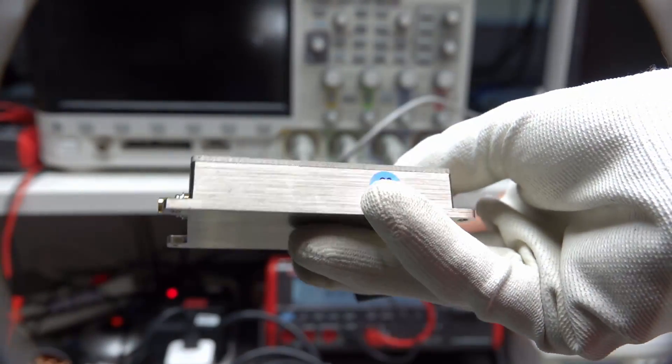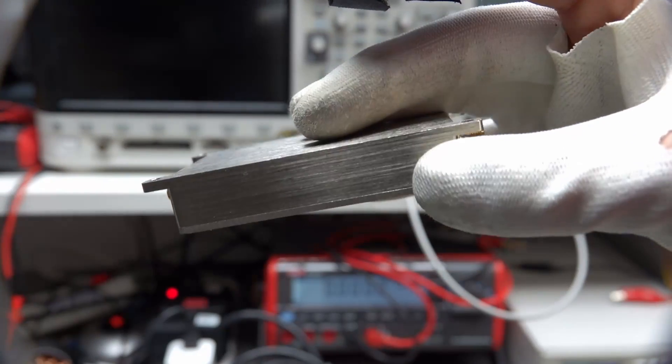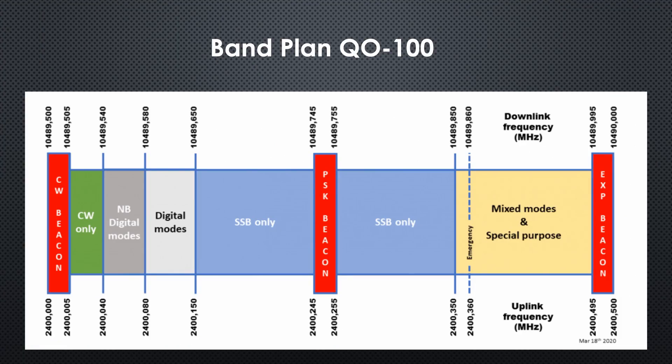For sure, an issue for the 20 watts of the amplifier later on. To find the exact frequency for our purpose, we consult the bandplan of the Q0100. The uplink is on these frequencies. So we choose the middle for the test, 2.4250.